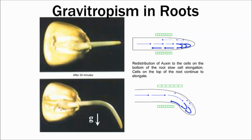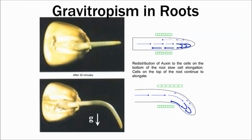In roots, auxin inhibits cell expansion — it has the opposite effect. So this time, when the auxin falls to the bottom of the root, growth slows down. And if the growth slows down here and carries on going relatively quickly on the other side, then it's going to bend downwards towards the water.